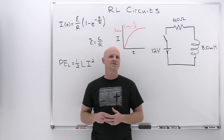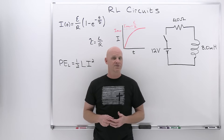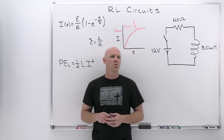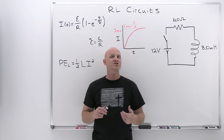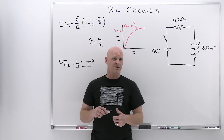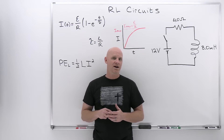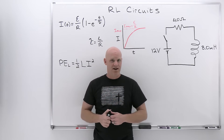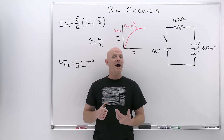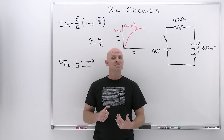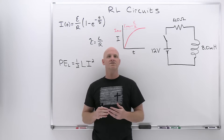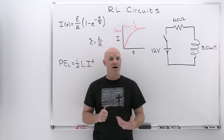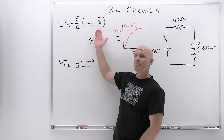An RL circuit has both a resistor and an inductor. A resistor provides resistance to the flow of current, while the inductor provides resistance to the change in current — the rate of change — in the circuit. From the last chapter, a circuit arranged in a loop has some self-inductance, which gives a back EMF that opposes the change in current. As a result, the current doesn't reach its maximum value all at once as predicted by Ohm's law; it takes a little bit of time. That's the time dependence we're going to look at here.